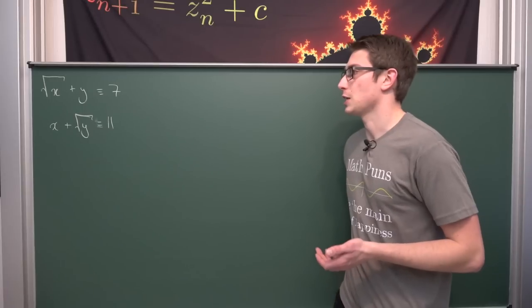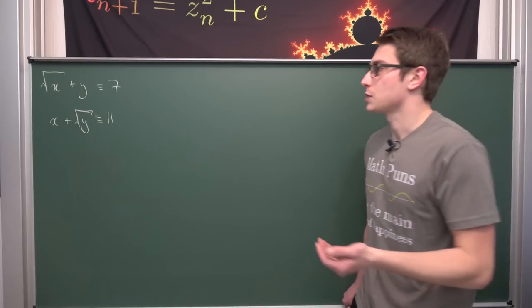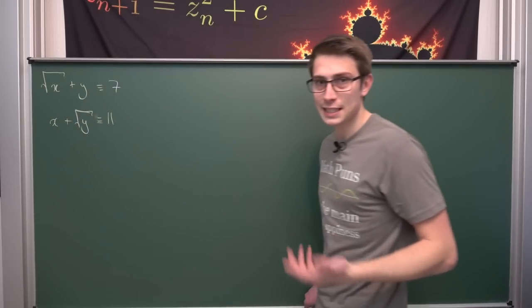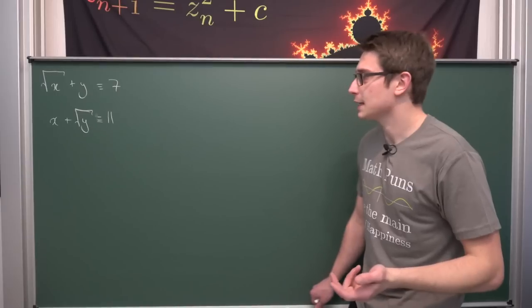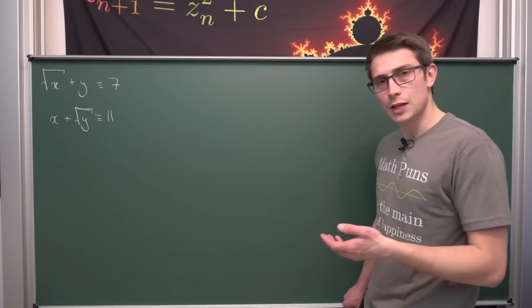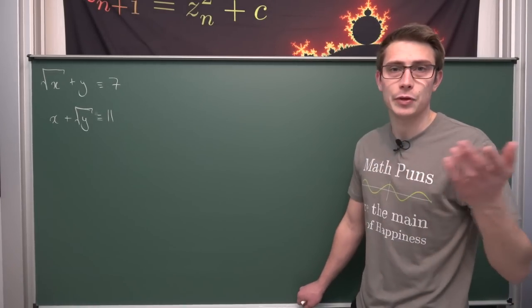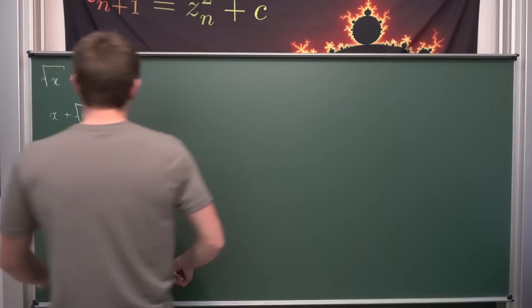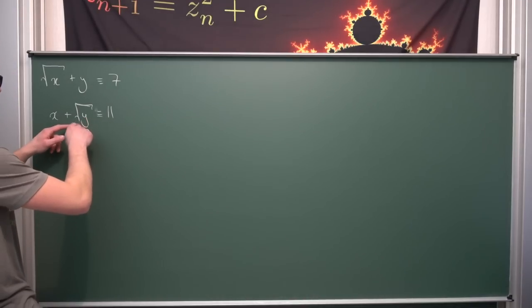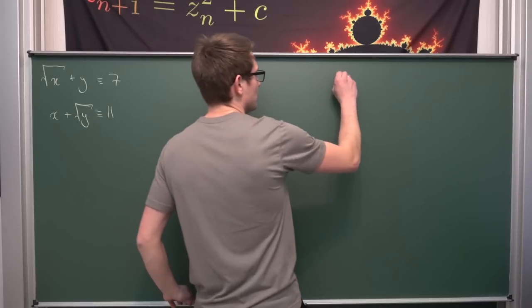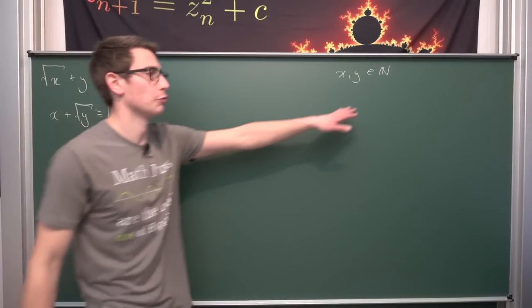So there are many ways to solve an equation like this. One way would be to square both of these equations, then you're going to end up with something that has x and y kind of denested, and then you can subtract both equations. But there's actually a way I find to be more elegant. Also, it's a Diophantine equation - I haven't said this fact before, but that means we want x and y to be element of natural numbers.